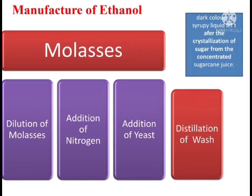Ammonium sulfate or ammonium phosphate is added as nitrogen compounds, which act as food for yeast during the fermentation process. In the addition of yeast step, two enzymes are present: one is invertase, and another one is zymase.